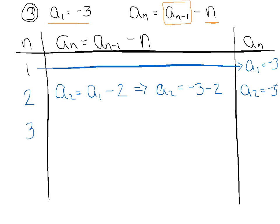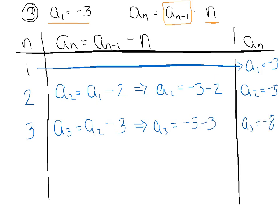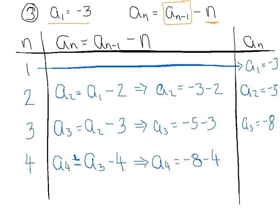Let n equal 3 — substitute 3 in for all the n's, not just the first couple. A sub 3 equals a sub 2 minus 3. And what should I be subtracting? This time it should be a 3 — that's the biggest bear trap in this problem. A sub 3 is really negative 5 minus 3, so a sub 3 equals negative 8. One more time: n equals 4. Substitute 4 in for every single place. A sub 4 equals a sub 3 minus 4, which implies a sub 4 is really negative 8 minus 4. Therefore the fourth term is negative 12. If you had to go one more term, it would be negative 12 minus 5, which is negative 17.